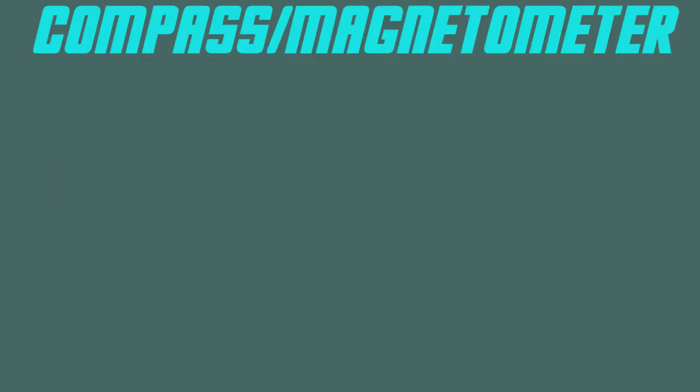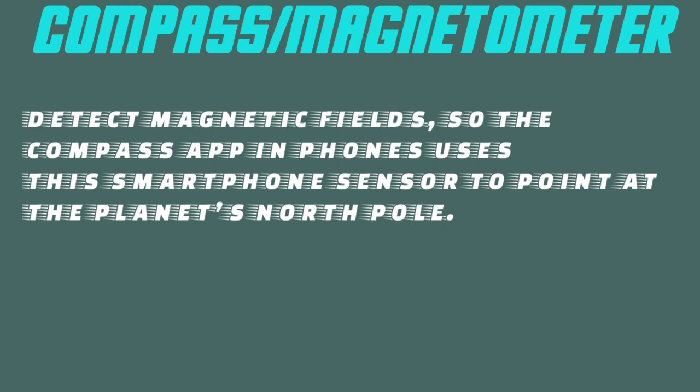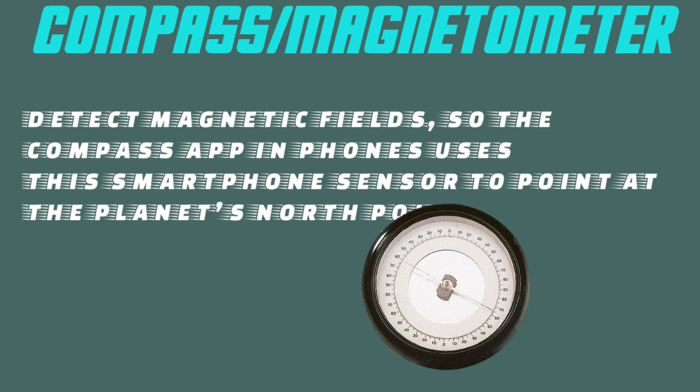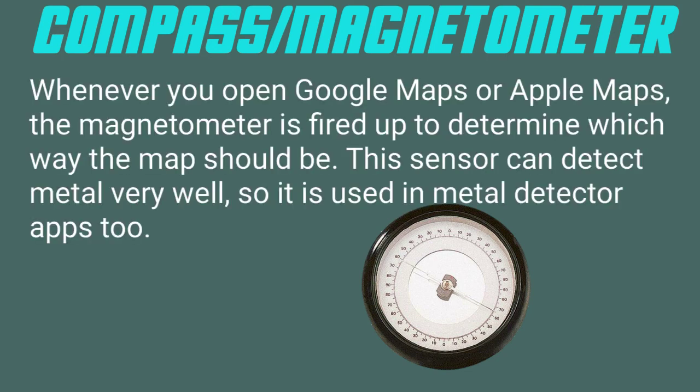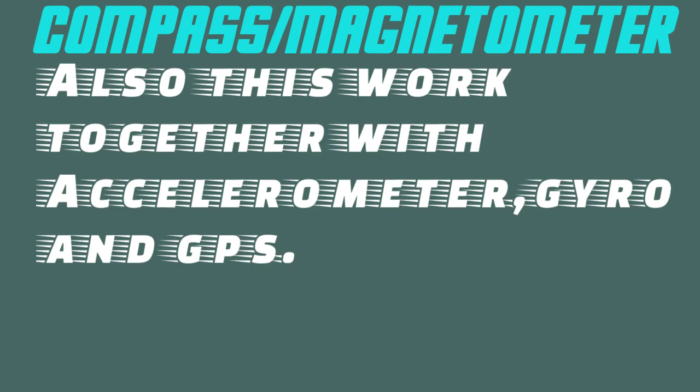Compass/Magnetometer detects magnetic fields, so the compass app in phones uses this sensor to point at the planet's north pole. Whenever you open Google Maps or Apple Maps, the magnetometer is fired up to determine which way the map should be oriented. This sensor can detect metal very well, so it is also used in metal detector apps. It also works together with the accelerometer, gyroscope and GPS.